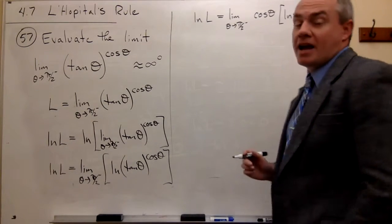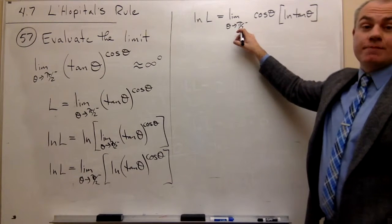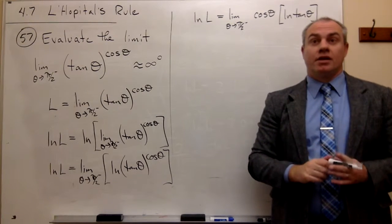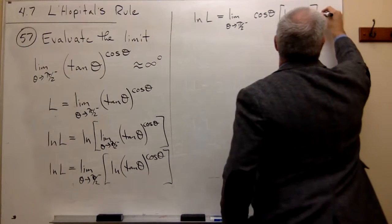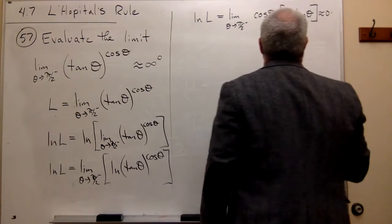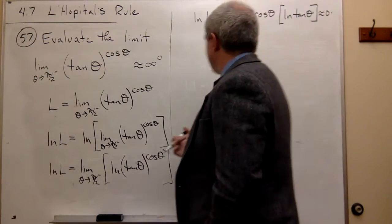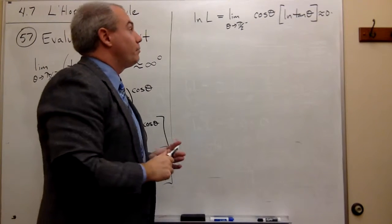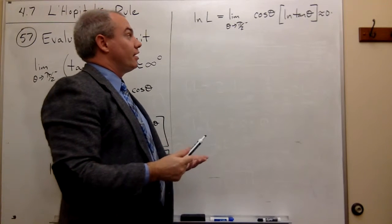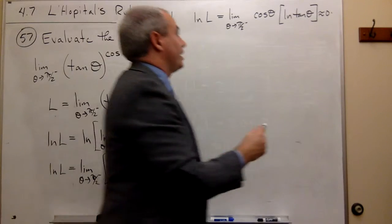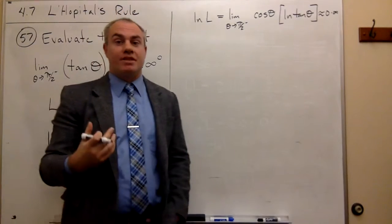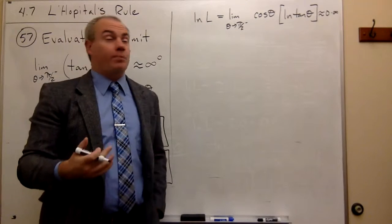So I get ln of L is equal to the limit as theta goes to pi over 2 from the left of cosine of theta times ln of tangent of theta. Now let's see what kind of form I have. If I plug in pi over 2, cosine of pi over 2 is 0. And tangent of pi over 2 is sine of pi over 2 over cosine of pi over 2, which is like infinity. So this has the form 0 times infinity, which is not a form on which I can use L'Hôpital's rule.